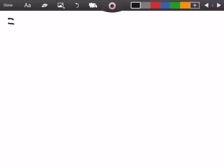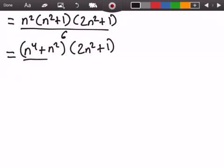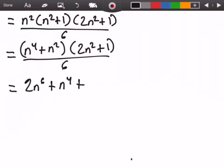So before we had n squared times n squared plus 1 times 2n squared plus 1 all over 6. So this is just equal to n to the fourth plus n squared times 2n squared plus 1 divided by 6. So this is equal to 2n to the fourth plus n squared all divided by 6.